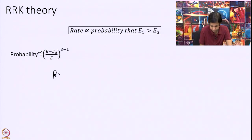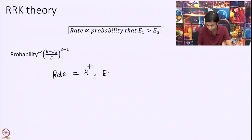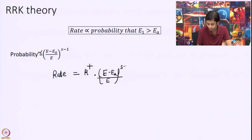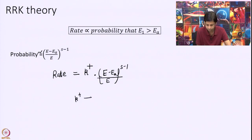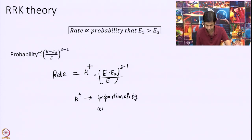The rate is then proportional to this probability, so we write k = k† · ((E − Ea) / E)^(s−1), where k† is a proportionality constant.